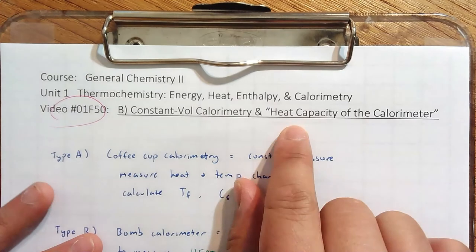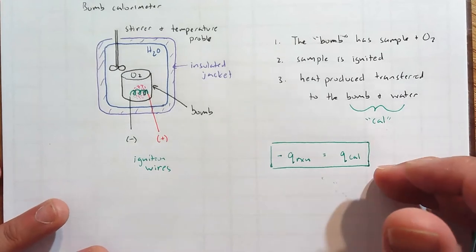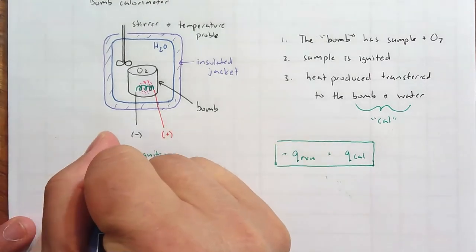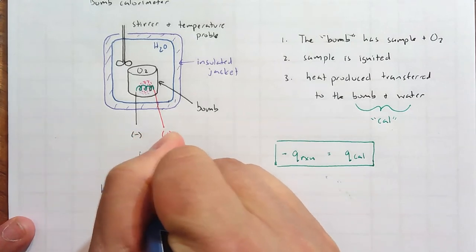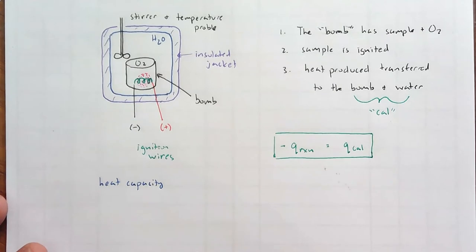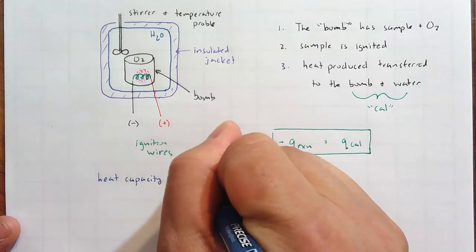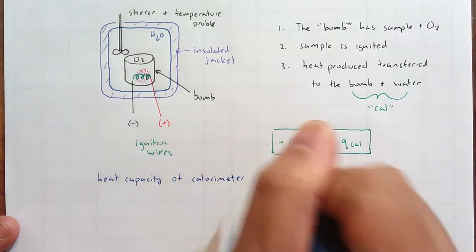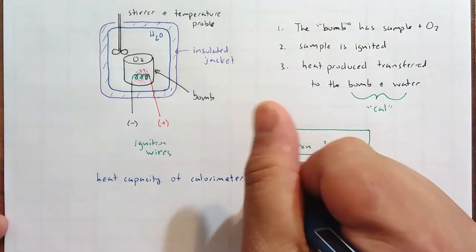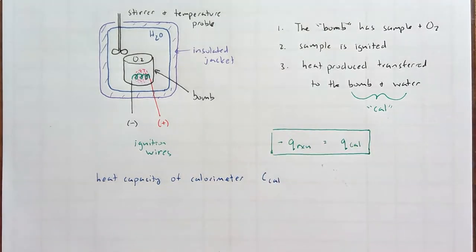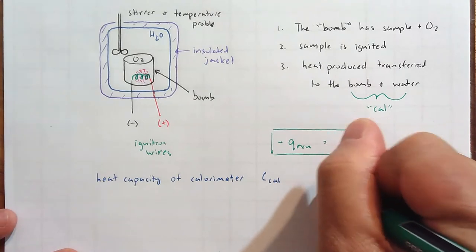Now, I mentioned that there's a new term called heat capacity of the calorimeter. We need to know how efficient this calorimeter absorbs the energy and how its temperature changes. That is technically the heat capacity. Heat capacity. And in most problems where you have a bomb calorimetry, you'll be given the heat capacity of the calorimeter. Again, we are going to think of the calorimeter setup as the bomb and the water. And the abbreviation is C Cal.